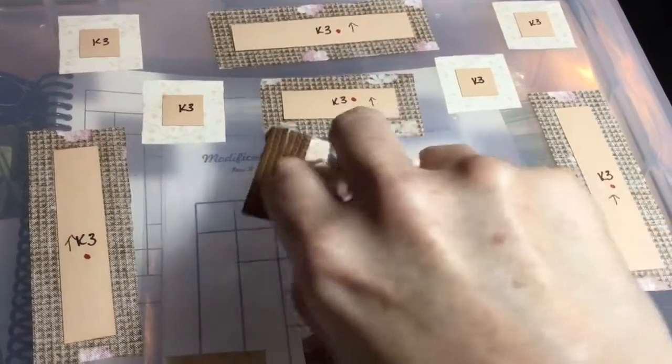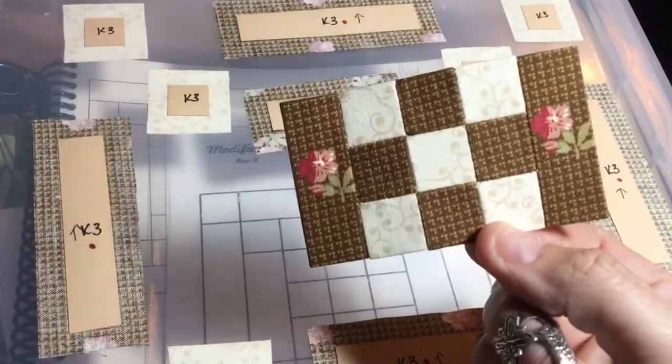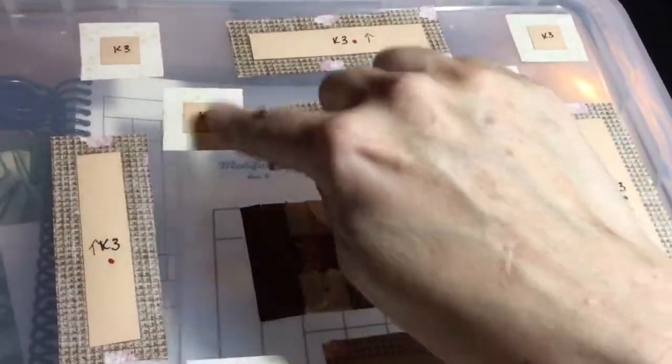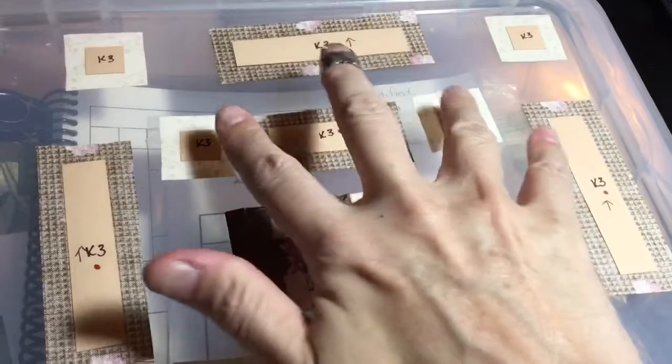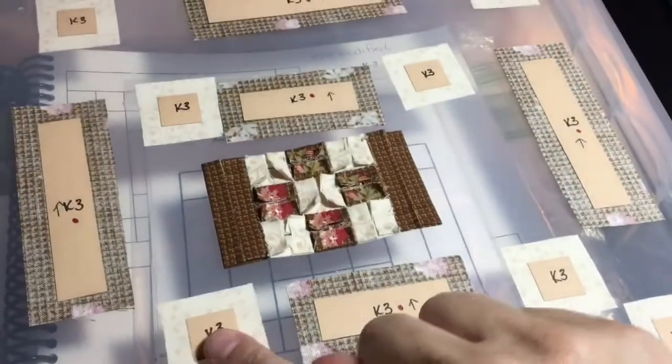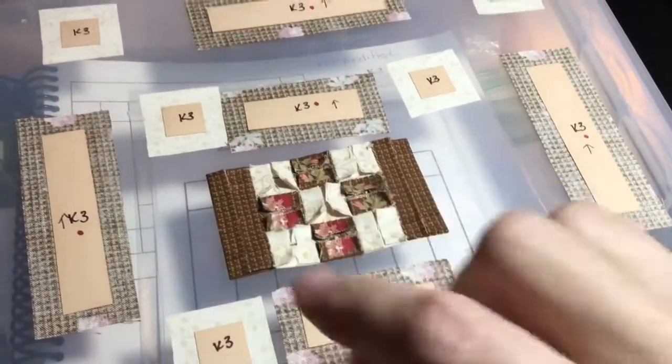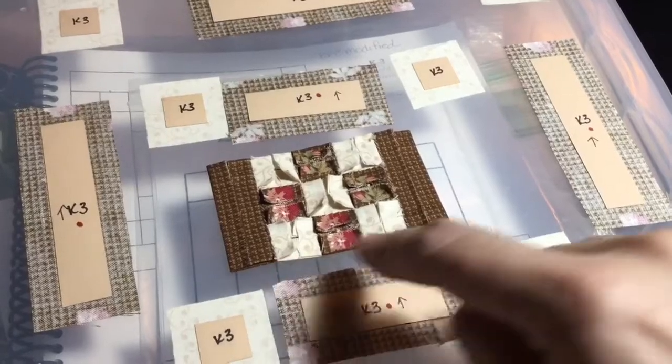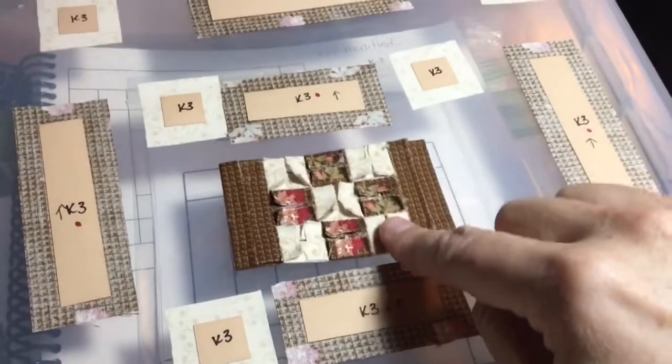So I've got the side rectangles on the middle nine patch section. And now I'm going to take this little bit and this little bit and connect it to each other, making a row to connect to each side of this section in the middle.